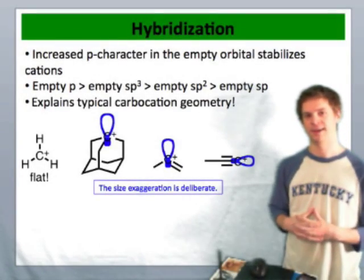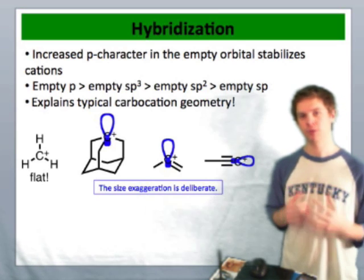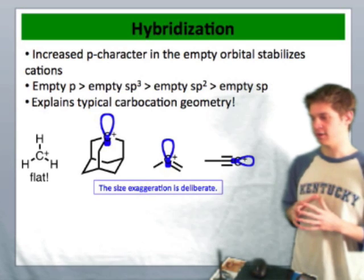We've seen that normal alkyl cations are planar, they're sp2 hybridized so that their empty orbital has as much p character as possible.